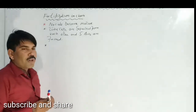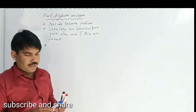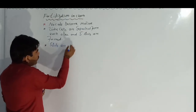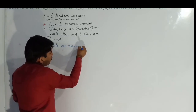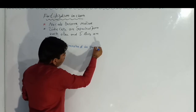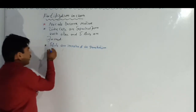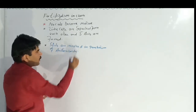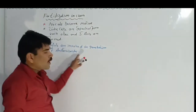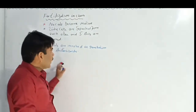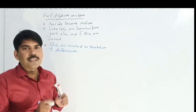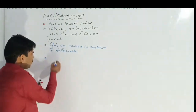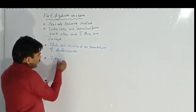These slits are used for the penetration or entry of male structures which are known as antherozoids. So slits are involved in the penetration of antherozoids. When the penetration of antherozoids occurs, the oosphere which is present in the nucule is fertilized and converted into a zygospore.